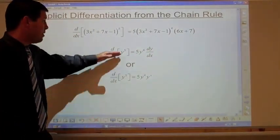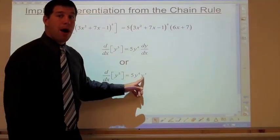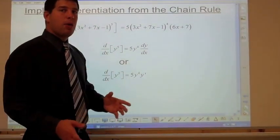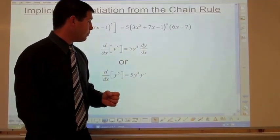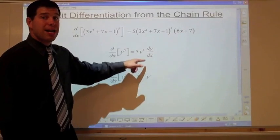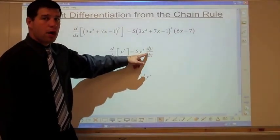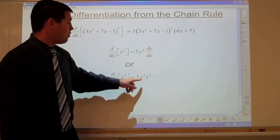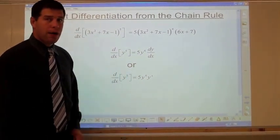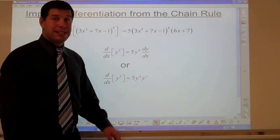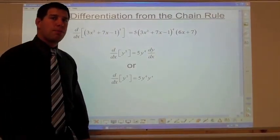Notation-wise, this is no different: derive to get 5y to the fourth and multiply it by y prime — similar to what you did with the chain rule using u-substitution. Either notation, dy/dx or y prime, is acceptable. If you use the y prime notation, make sure the prime mark is clear.